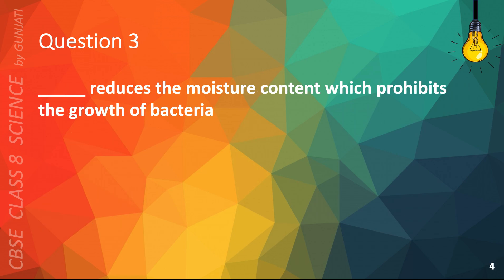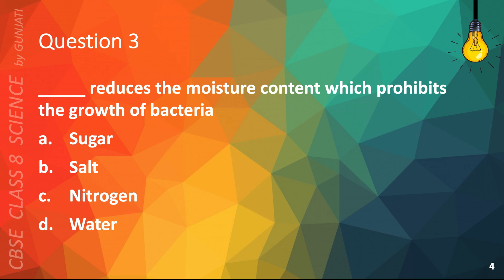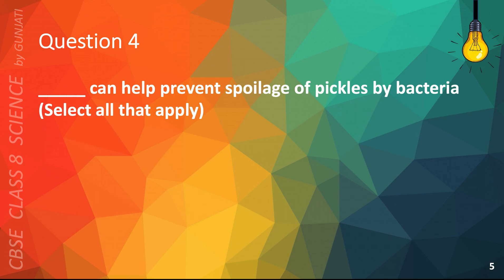Question 3. Blank reduces the moisture content which prohibits the growth of bacteria. A. Sugar, B. Salt, C. Nitrogen, D. Water. The correct answer is A. Sugar.